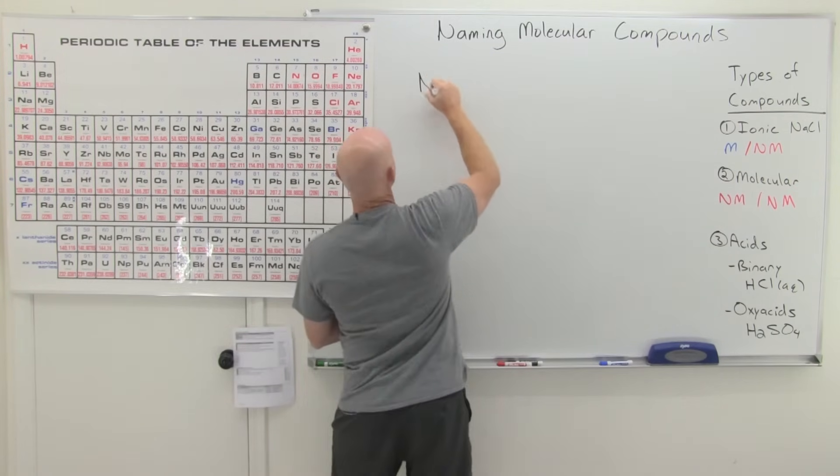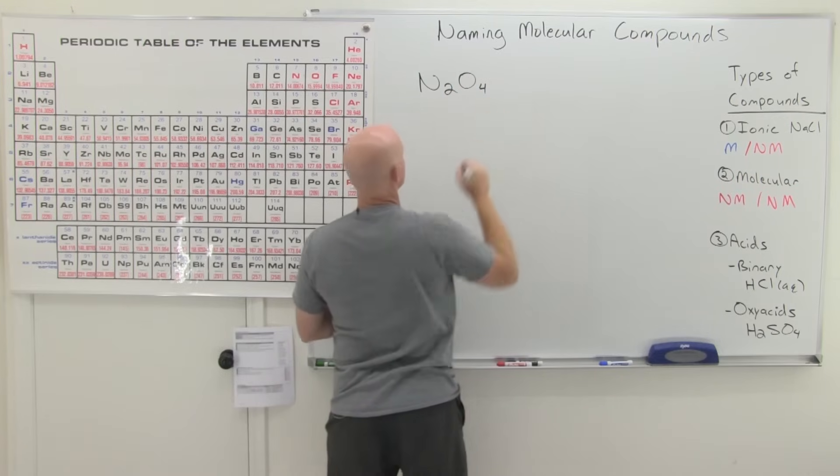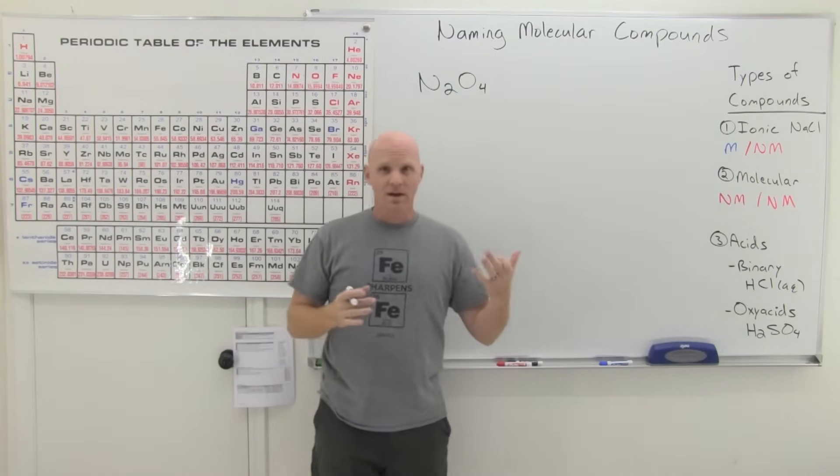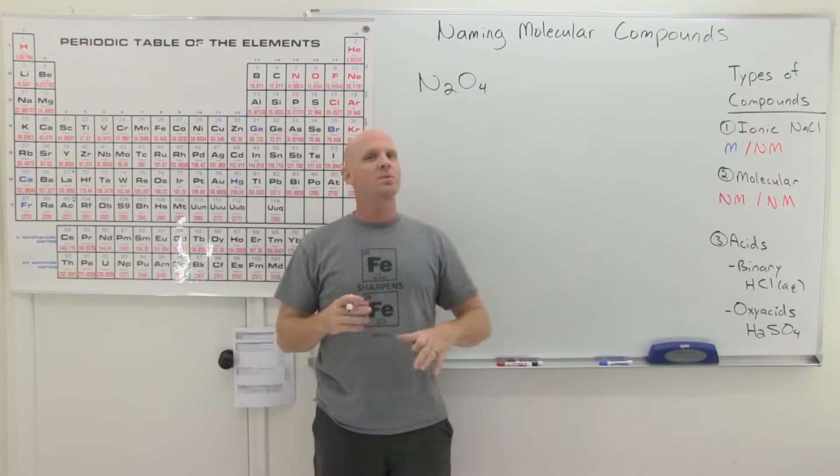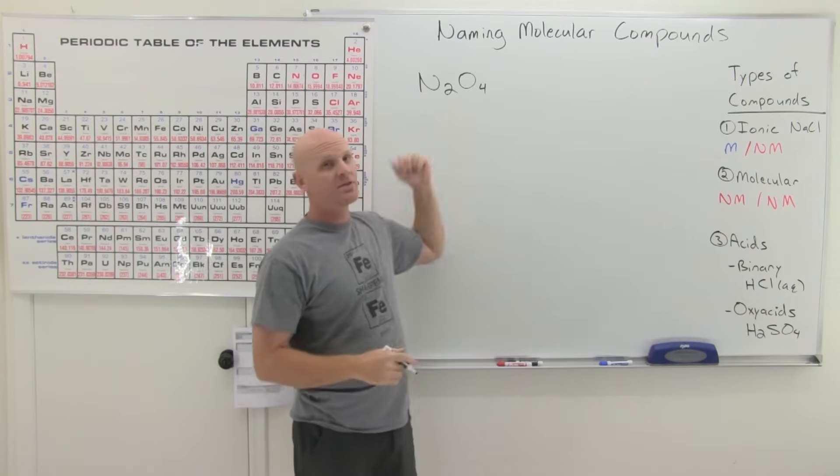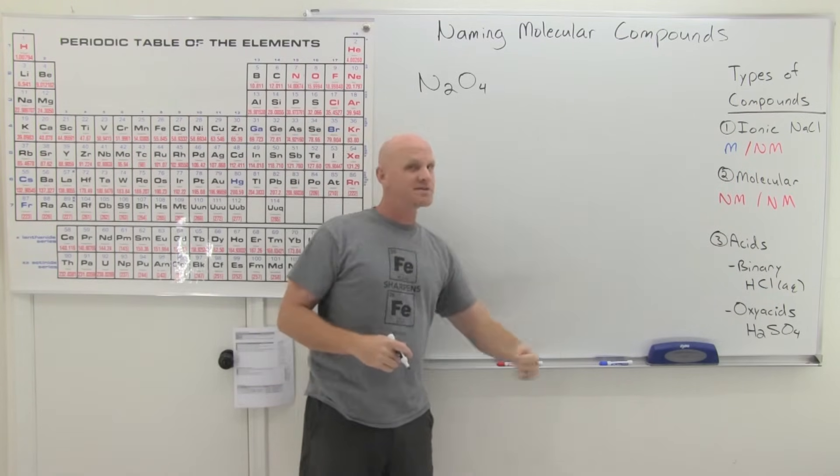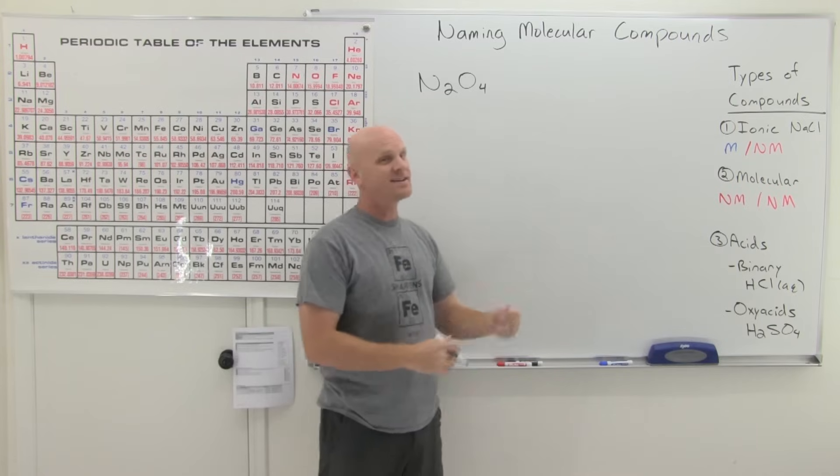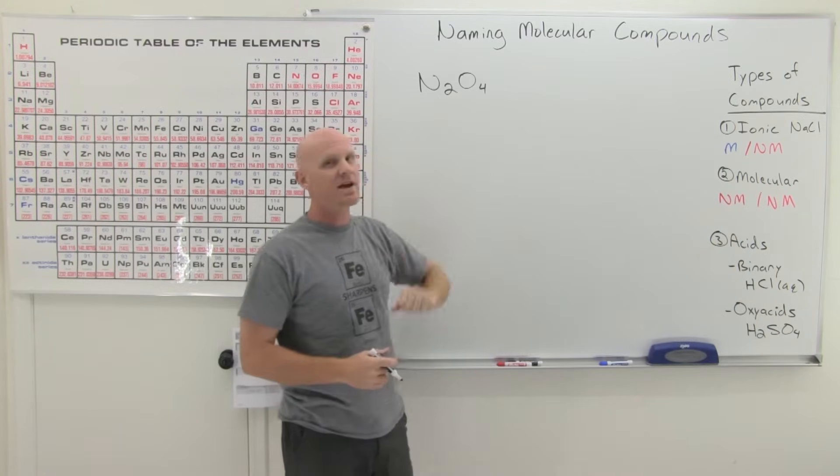So let's take a look at several compounds here. And we'll start with N2O4. And there's part of this that's going to be similar to what we did last time. So we're going to name the first element first and the second element second. So we'll name them in the order they're listed in the chemical formula.